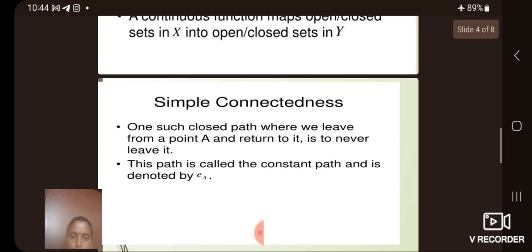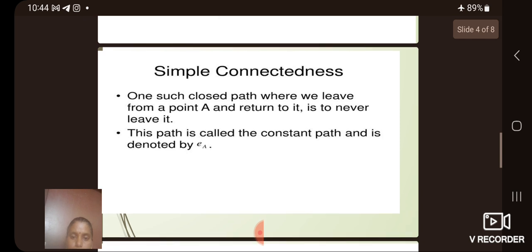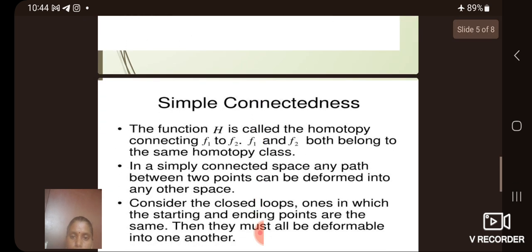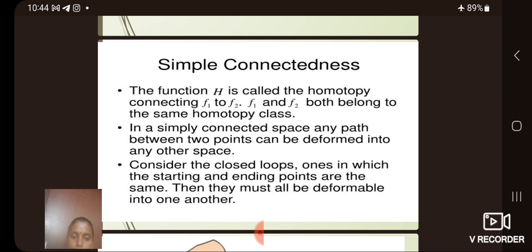Then next we see simple connectedness. One such closed path where we leave from a point a and return to it without leaving—this path is called the constant path and is denoted by e_a. The function h is called the homotopy connecting f1 to f2.